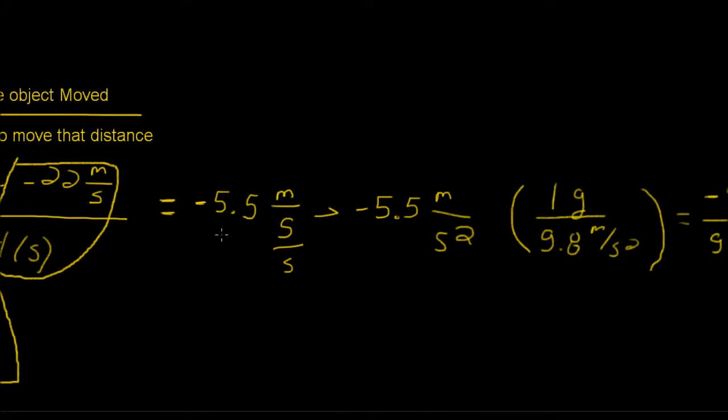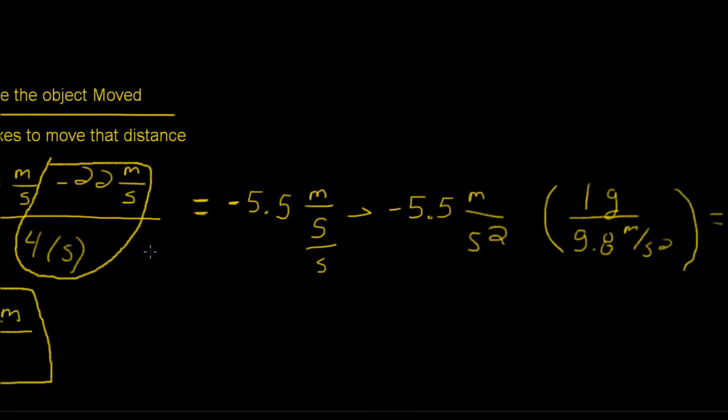We end up with negative 5.5, and our units were meters per second over seconds. So when you have a second over second, as you know from algebra, you just square that, so you have negative 5.5 meters per second squared.